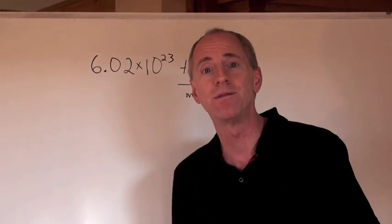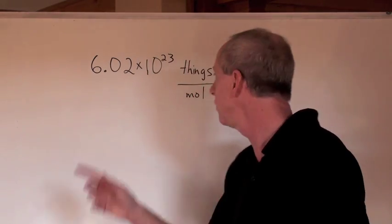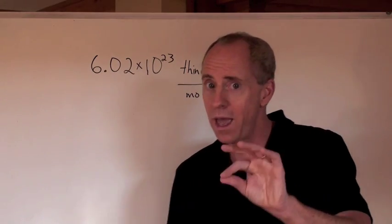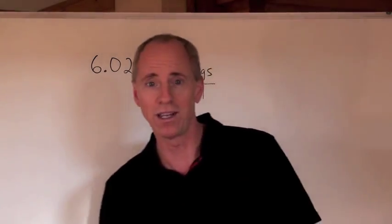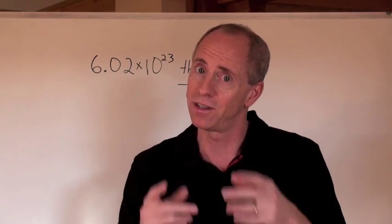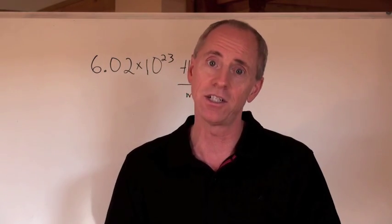A mole is 6.02 times 10 to the 23. That's how many things there are in one mole. M-O-L-E, and the abbreviation is M-O-L. Not much of an abbreviation, but that's what it is, and that's what we use in all the calculations that we're going to do.